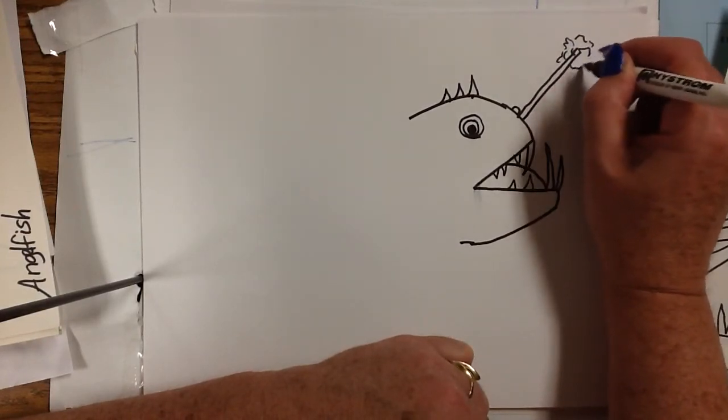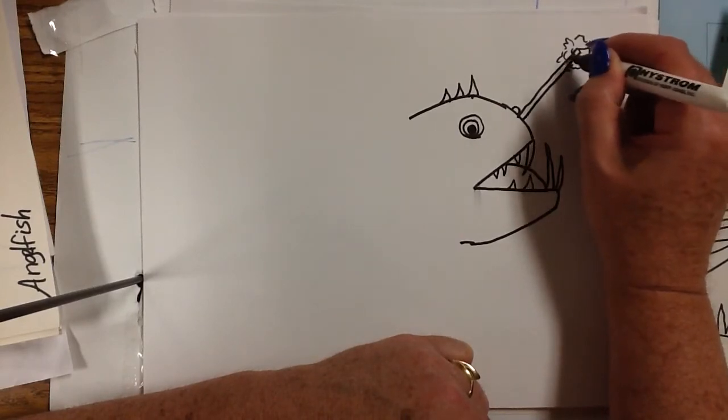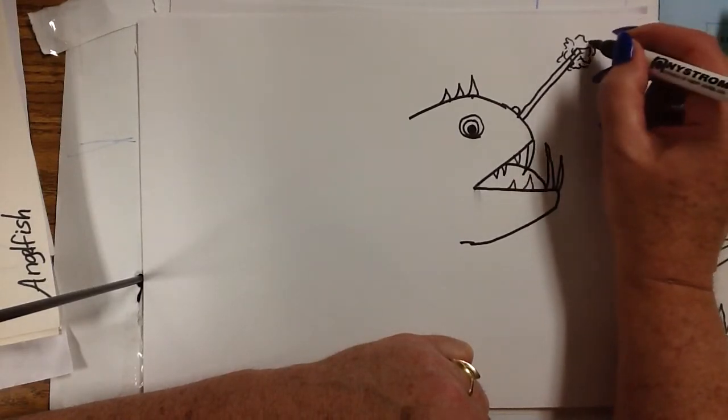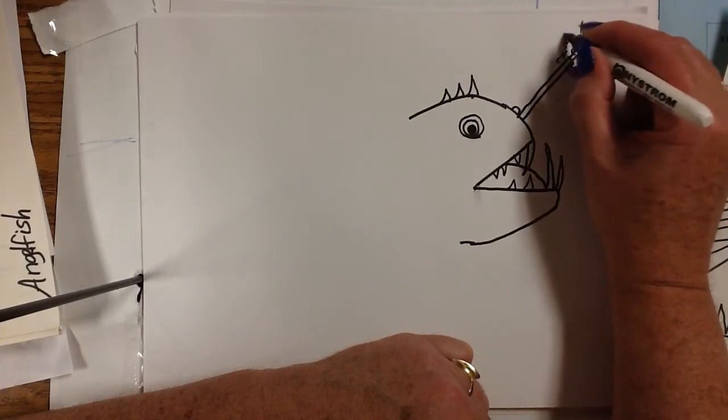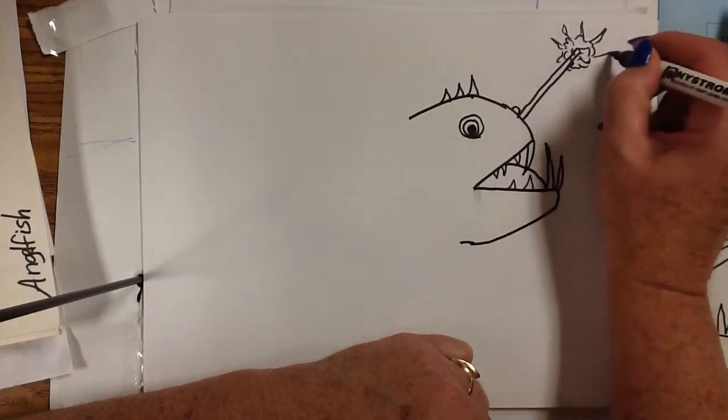And this forms that rod where the actual tissue is here. It's kind of like a free-form blob, kind of like a pom-pom, if you think of a pom-pom. And then it's got these little spikes coming out. And this is what attracts the fish.